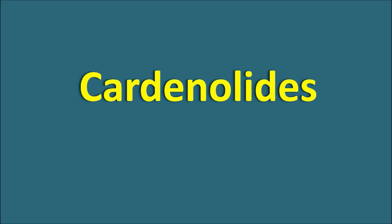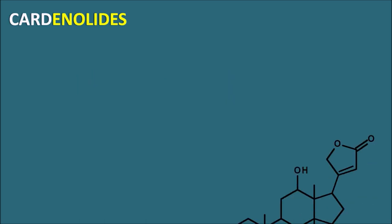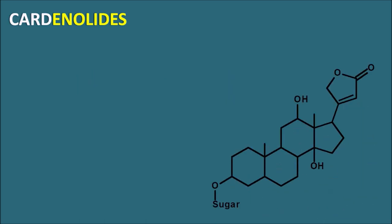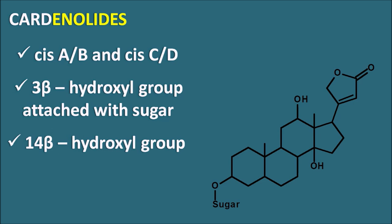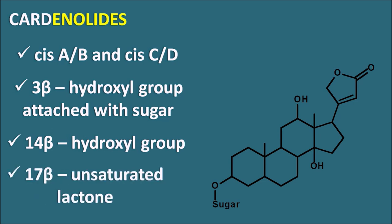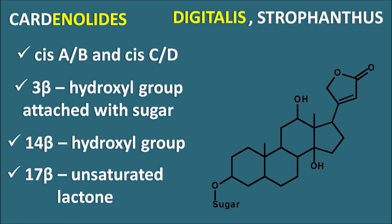Now let us see the cardenolides — cardiac glycosides having a 5-member lactone ring at the 17th position. Cardenolides have cis A/B and cis C/D fusion. At the third position they have a hydroxyl group in beta configuration, which is modified and attached with the sugar moiety. The 14-beta hydroxyl group is present and essential for activity. At the 17th position, an unsaturated lactone is attached by beta configuration. Examples of cardenolide-containing plants include digitalis, strophanthus, and convallaria.